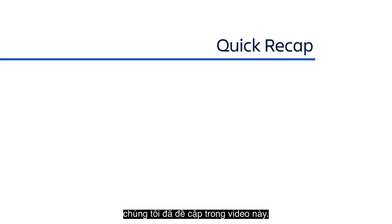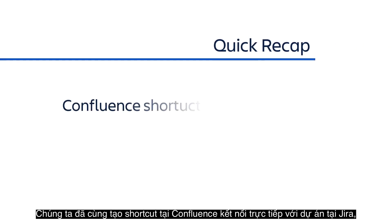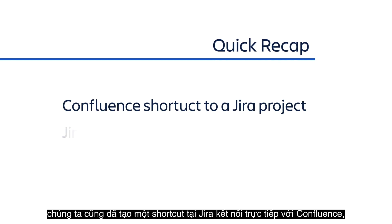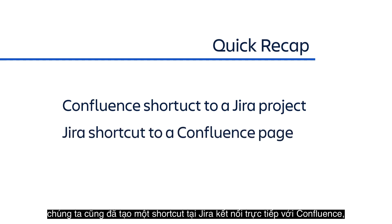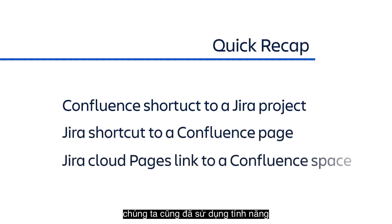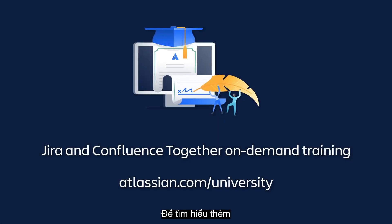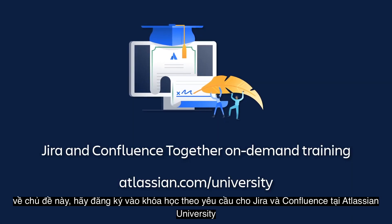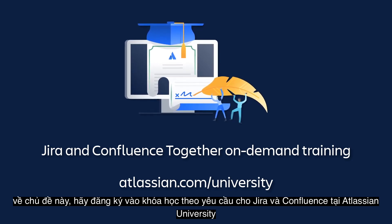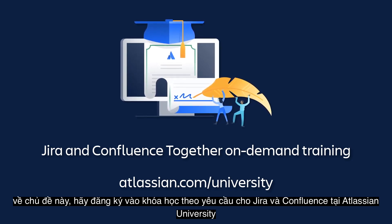Let's quickly recap what we covered in this video. We created a Confluence shortcut that connected directly to a Jira project. We created a Jira shortcut that connected directly to a Confluence page. And we used the Jira Cloud Pages feature to create an integrated link between Jira and a related Confluence space. To learn more about this topic, enroll in the Jira and Confluence Together On Demand course at Atlassian University.